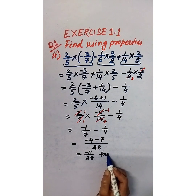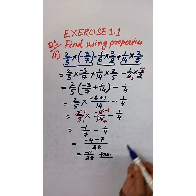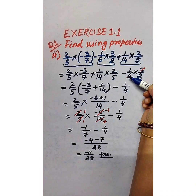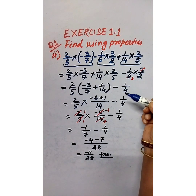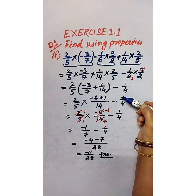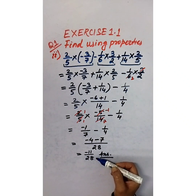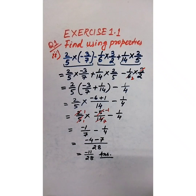So the answer is negative 11/28. By using the properties of associativity and distributive property, we have found the answer negative 11/28.